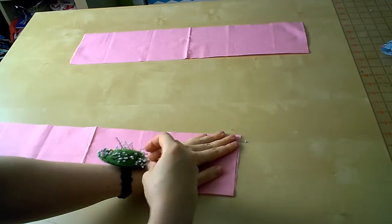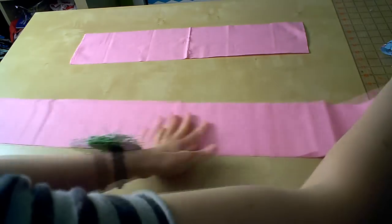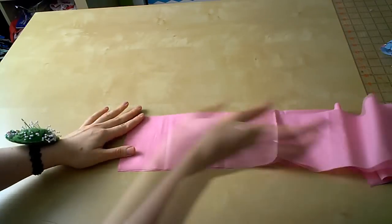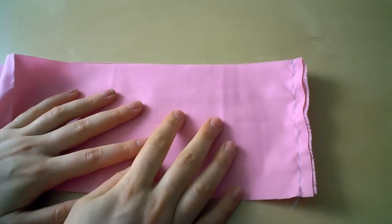I'm going to line up the edge of one of the shorter pieces with the longer piece, and I'm going to pin them right sides together. And then I'll repeat with the other side. Using a 3/8 inch seam allowance and a straight stitch, or a serger, we're going to sew the three pieces together.